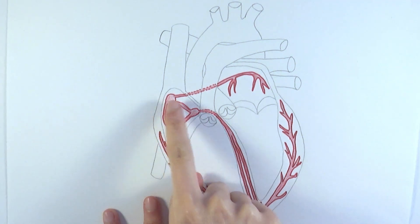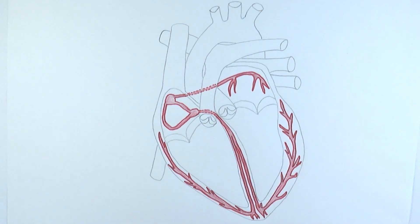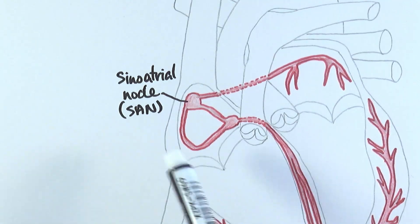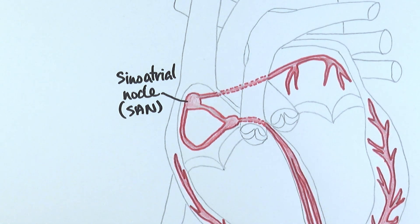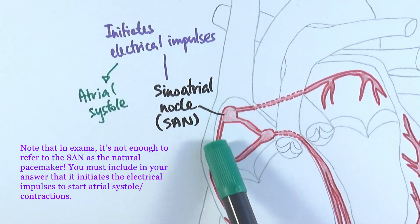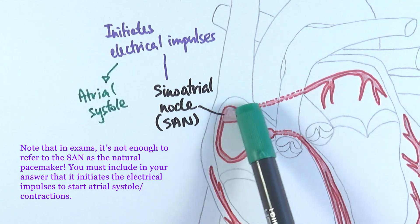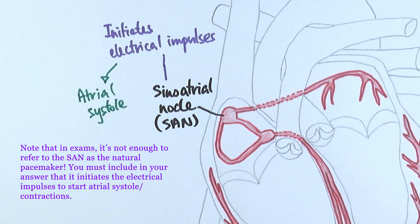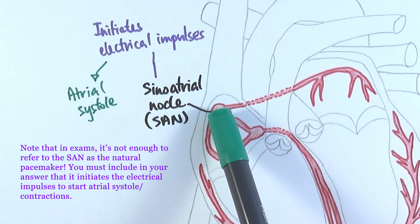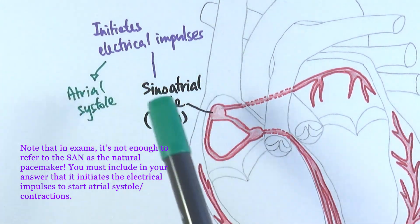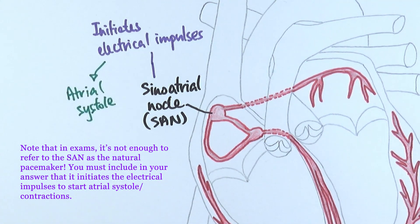There are four different parts: two nodes and different fibers. First, we have the sinoatrial node, which we consider the natural pacemaker because it is the tissue that actually initiates the electrical impulse. It will spread those impulses along these fibers, transmitting the signal across the atrial walls. As the electrical signal passes through these fibers, it causes atrial systole, which is the contraction of the atria.